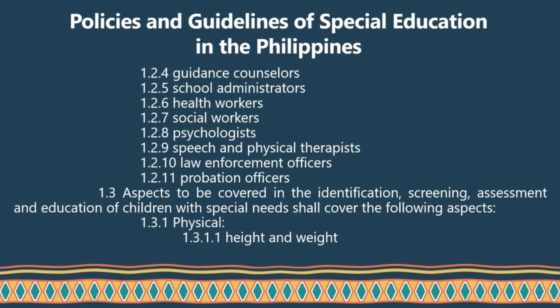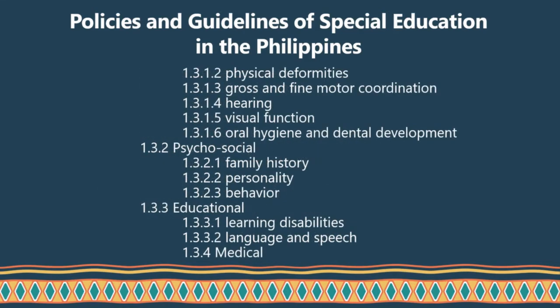Identification, screening, and education of children with special needs shall cover the following aspects. For the physical aspect: the child's height and weight should be measured, along with physical deformities, gross and fine motor coordination, hearing, visual function, oral hygiene, and dental development. For psychosocial assessment: interviews and records of the child's family history, personality, and behavior are included. For the educational aspect: learning disabilities, language and speech, and medical history will also be included in the assessment reports.